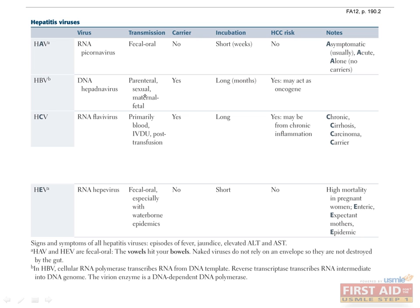HBV is transmitted through blood transfusions, sexual contact, and placentally — one of the TORCH infections. Acute infection results in jaundice and fever. Chronic infection may result in an asymptomatic carrier state, but there is risk of developing cirrhosis and/or hepatocellular carcinoma.